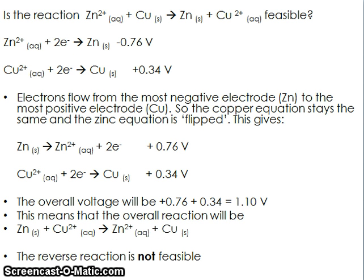Here's another example. The question is: is the reaction Zn²⁺ + Cu → Zn + Cu²⁺ feasible? This is a typical exam question — you're given an equation and asked if it's feasible or not. We write out our two half-equations and look up the values in the electrochemical series. Zinc is −0.76 and copper is +0.34. Electrons go from the most negative electrode to the most positive, so zinc is most negative and copper is most positive. The zinc equation is the one that gets flipped — Zn → Zn²⁺ + 2e⁻. Cu²⁺ takes those electrons and becomes Cu, giving us: Zn → Zn²⁺ and Cu²⁺ → Cu.